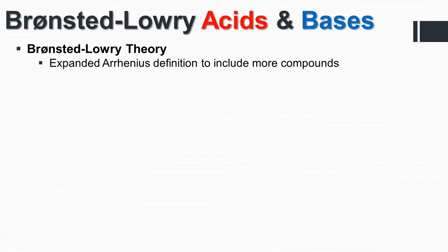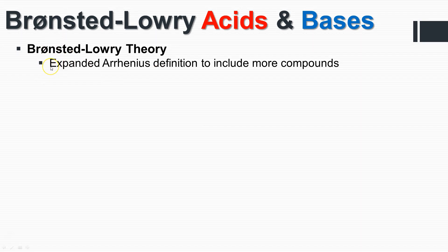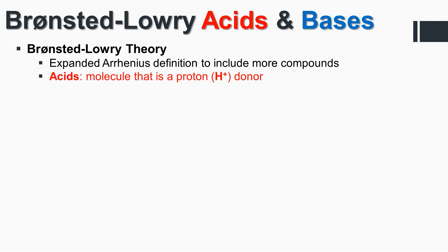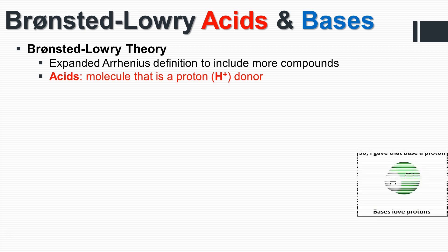Another theory, refined from the Arrhenius, is called the Brønsted-Lowry. The Brønsted-Lowry expands the Arrhenius definition and includes more compounds. An acid, instead of something that increases the concentration of hydronium, is now defined as a molecule that donates a proton — it's similar but more specific and covers more criteria.